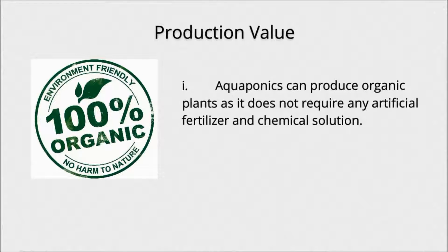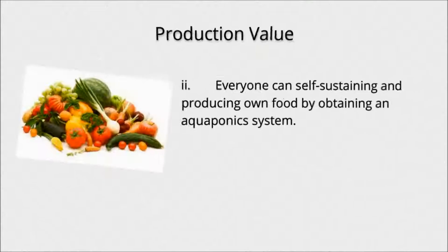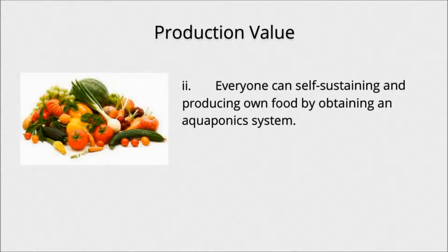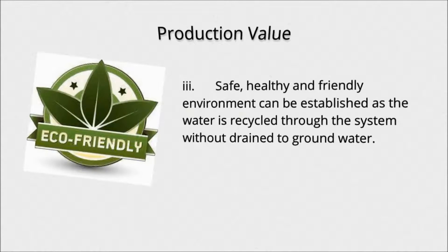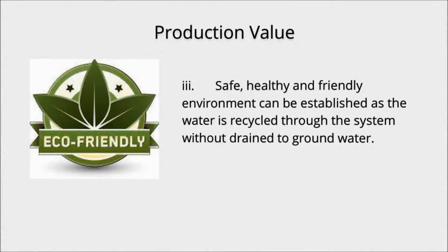The reasonable production value of aquaponics is that it can produce organic plants as it does not require any artificial fertilizer and chemical solution. Secondly, everyone can be self-sustaining and produce their own food by obtaining an aquaponics system. Thirdly, a safe, healthy, and friendly environment can be established as the water is recycled through the system without draining to groundwater.